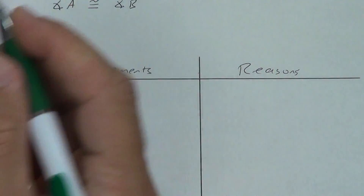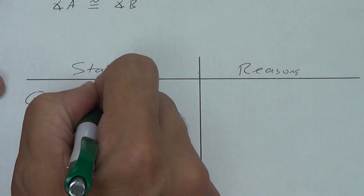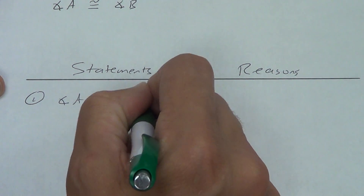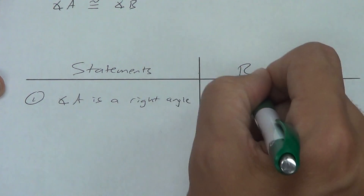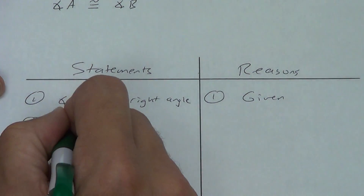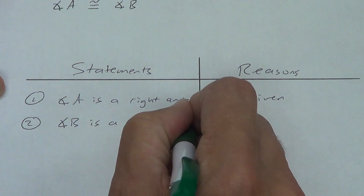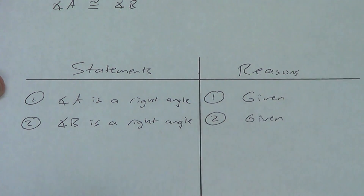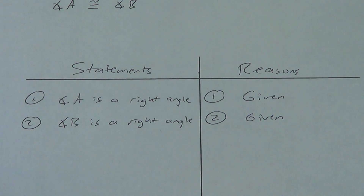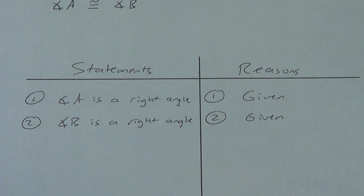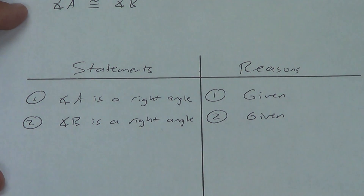In statement one, we're going to start with our givens. Angle A is a right angle — that's a given. Statement two: angle B is a right angle — also a given. Now we've got to prove that angle A is congruent to angle B. What do we know about right angles? The definition of a right angle is an angle that equals 90 degrees, so we're going to use that.